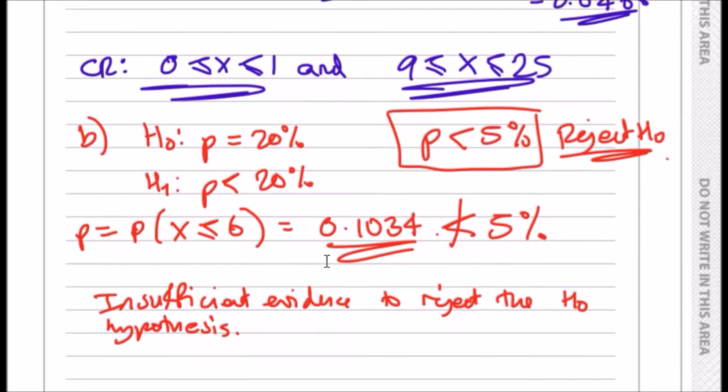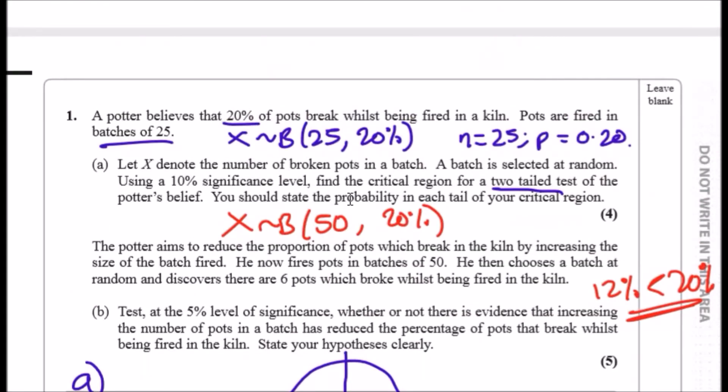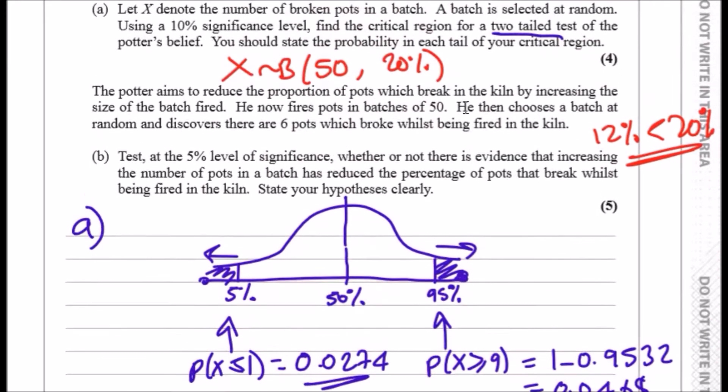So what does this actually tell us? If we can't reject it, there is insufficient evidence to actually reject it, that means we're going to accept it. So we're going to assume that the proportion remains constant at 20%, so we have to agree with the potter's belief.